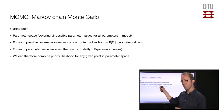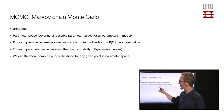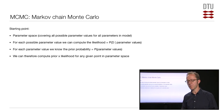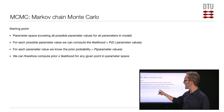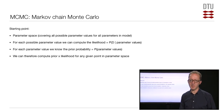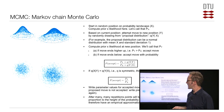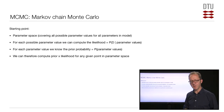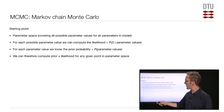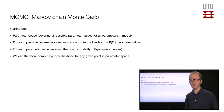For any possible point in parameter space, you can compute the likelihood and you know the prior probability. This means you can compute prior times likelihood for any given point in parameter space. Prior times likelihood is actually the numerator of Bayes' theorem — the likelihood times the prior. So for any given point in parameter space, you can compute the value that is on top of that equation in Bayes' theorem.